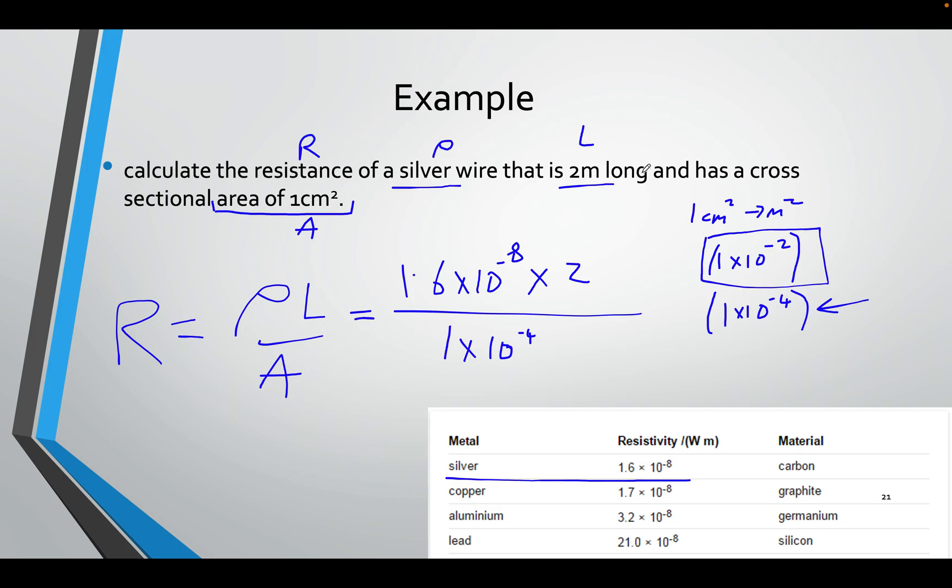We cannot use centimetres, so we have to convert centimetres to metres squared. So that means what I will do is take this times 10 to the minus 2, because you divide by 100, or times 10 to the minus 2. I will square it, it will be times 10 to the minus 4 instead. I will write that down, and you will get your answer. Easy.